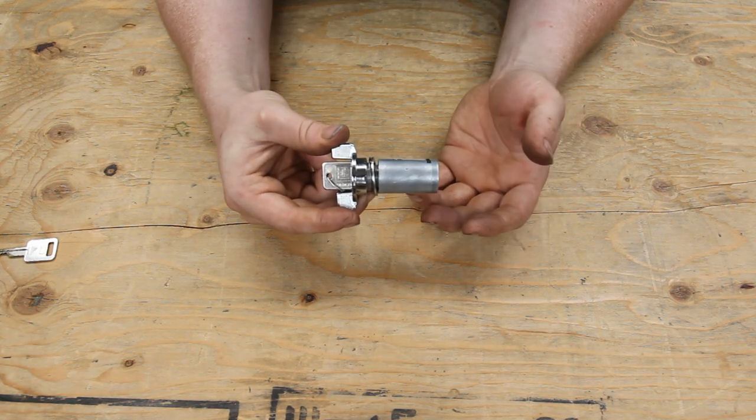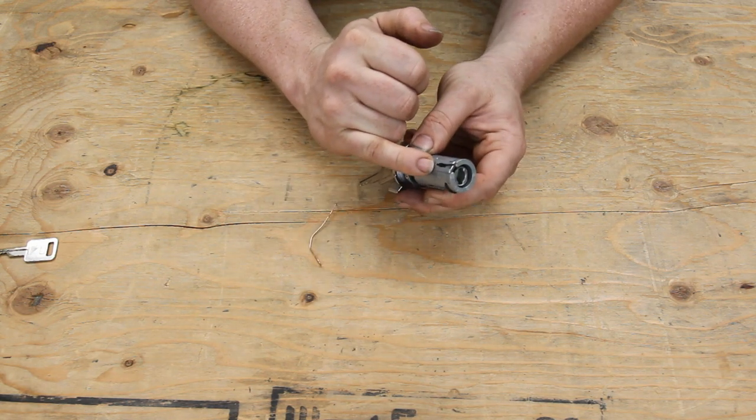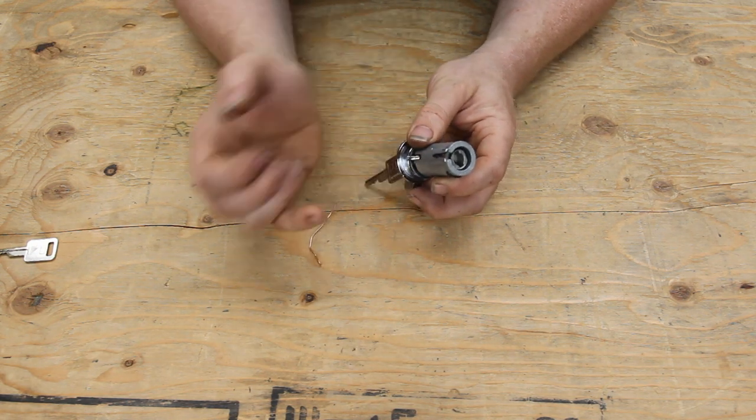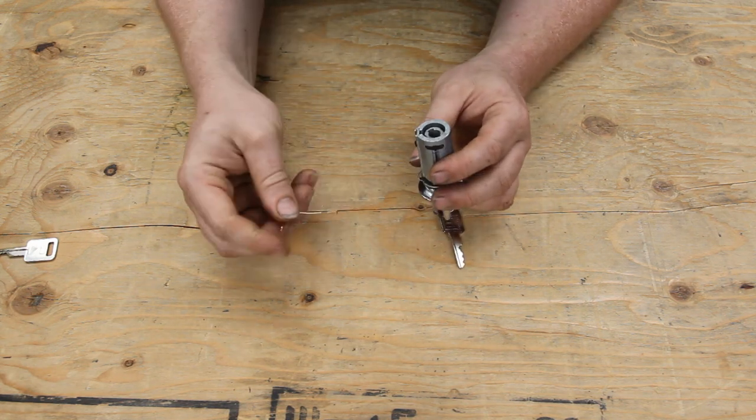More than likely, it's not going to come apart completely because there's two things. One, your nylon key insertion pin is probably in the way. And two, your key lock pin is also probably in the way.